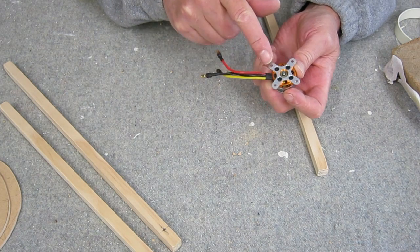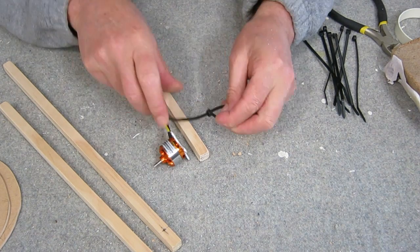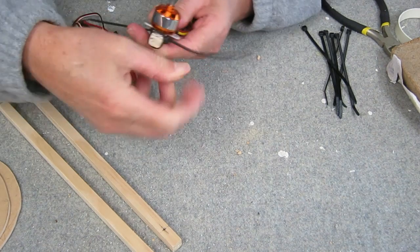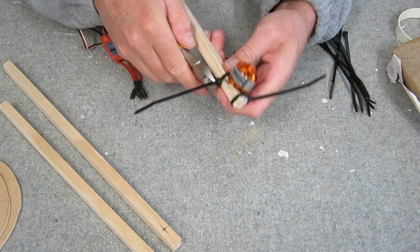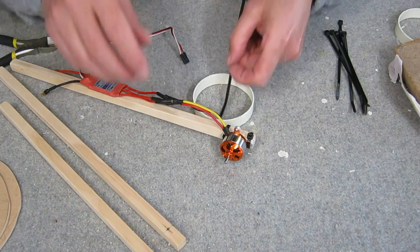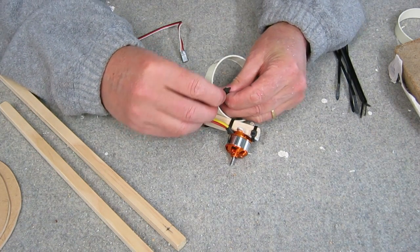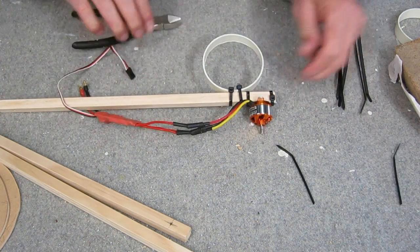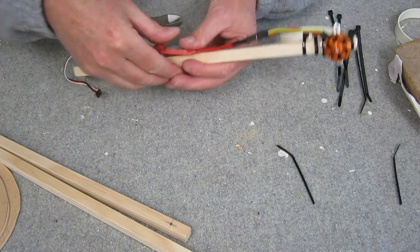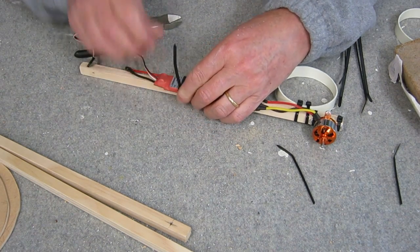I've attached the supplied motor mount to the motor and lock tighted those little screws in, and that just gets zip tied to the arm. Pulling it nice and tight and just clipping off the ends. Same for the landing gear, just 2 zip ties and it's on. One zip tie for the ESC. I'm putting that on the side of the arm, doesn't really matter where it goes.